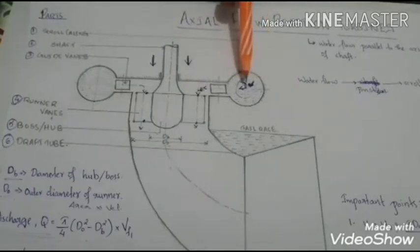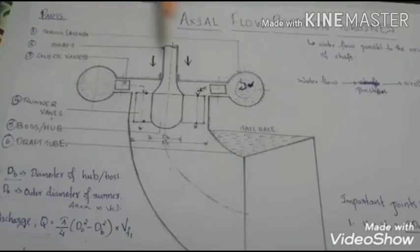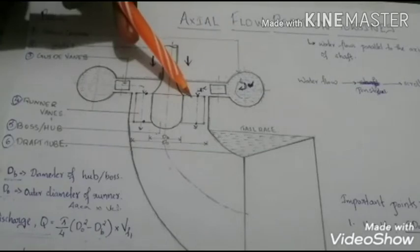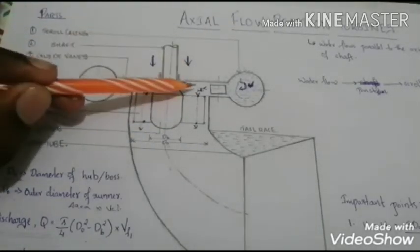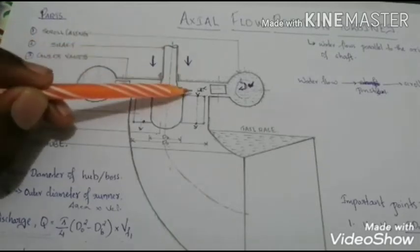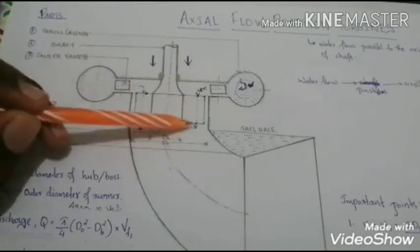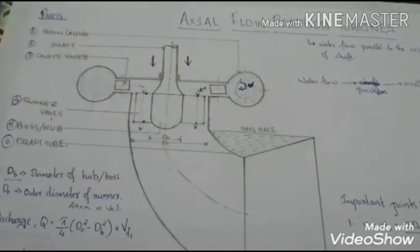And after circulation it moves to the guide vanes. These are the guide vanes. And these guide vanes guide the flow of water through an angle of 90 degrees to the runner vanes. And thus the flow of water becomes parallel to the axis of rotation of the shaft.